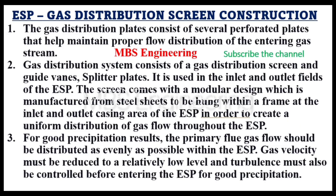Now we understand the construction of the gas distribution screen in the electrostatic precipitator. Point 1: The gas distribution plates consist of several perforated plates that help maintain proper flow distribution of the entering gas stream. Point 2: The gas distribution system consists of a gas distribution screen and guide vanes and splitter plates. It is used in the inlet and outlet fields of the ESP.